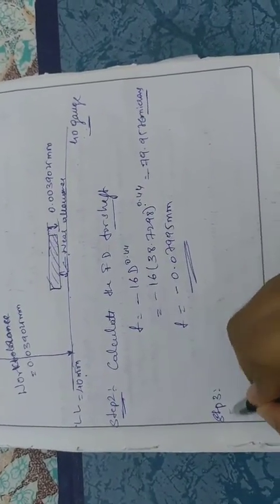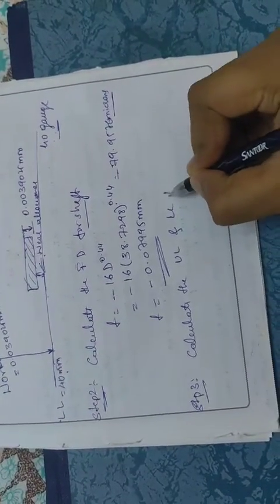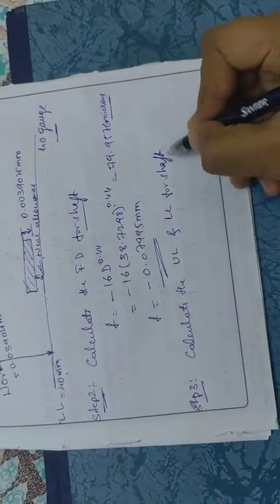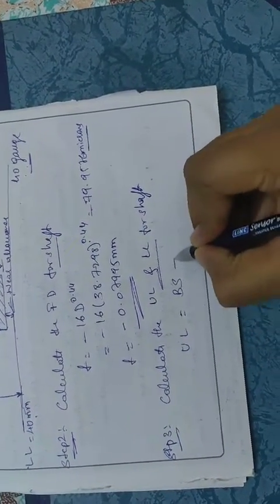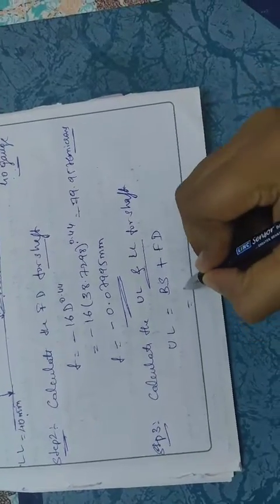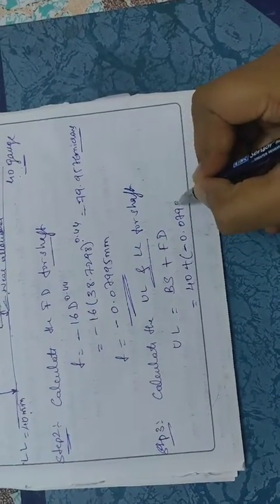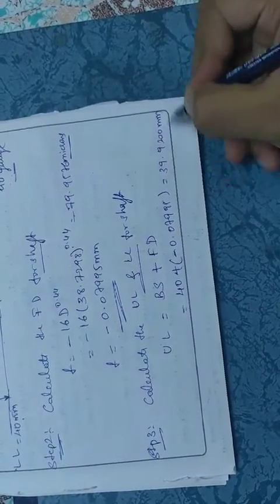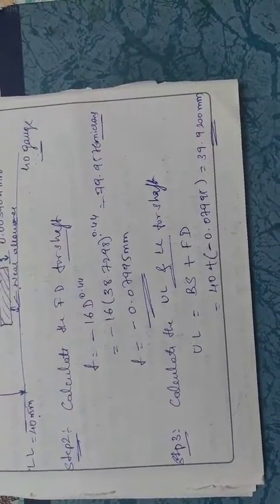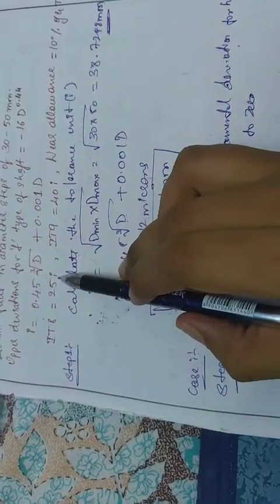Step 3: calculate the upper limit and the lower limit for the shaft. The upper limit equals basic size plus fundamental deviation: 40 + (-0.07995) = 39.9200 mm. Now we calculate the standard tolerance. The grade value given in the problem is IT9, which equals 25i.